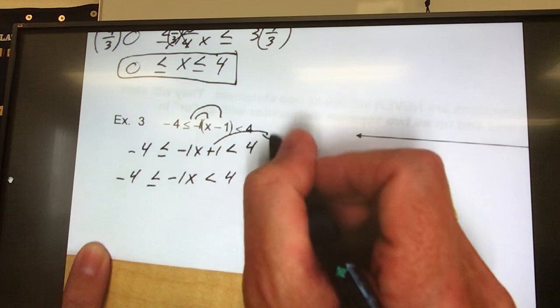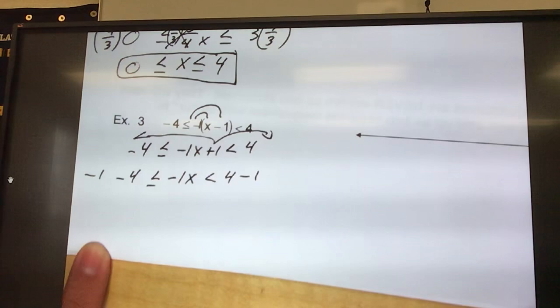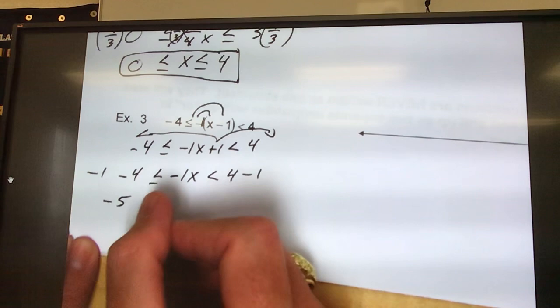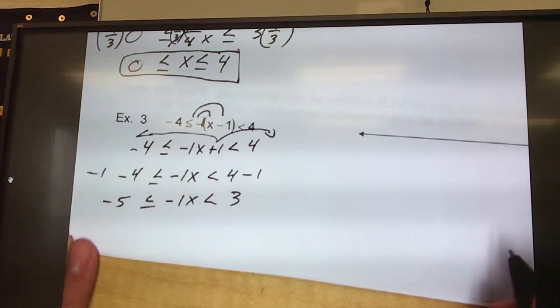I have a 4 over here. And, a negative 4 on this side. I've got to get this 1 out of here. This positive 1 has to go across both sides. When it crosses, it changes to a negative 1. Clean it up. Negative 1 minus 4 is a negative 5. 4 minus 1 is 3.